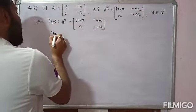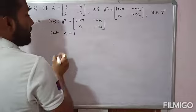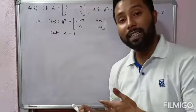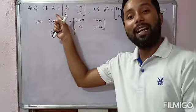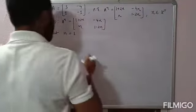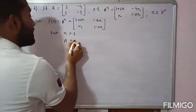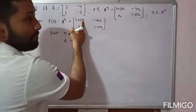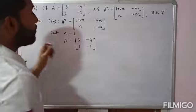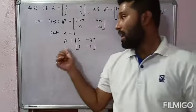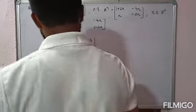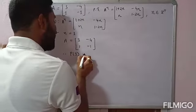Step 2: put n equal to 1 on both sides. On the left we get A to the power 1, which is just A. On the right, replacing n by 1: [1+2, −4; 1, 1−2] = [3, −4; 1, −1], which is exactly the given matrix. Therefore P(1) is true.